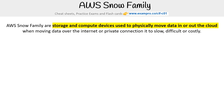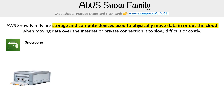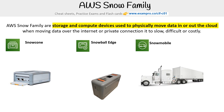Hey, it's Andrew Brown from Exam Pro. We are taking a look at the AWS Snow Family. This is storage and compute devices used to physically move data in or out of the cloud when moving data over the internet or a private connection that is too slow, difficult, or costly. We have Snow Cone, Snowball Edge, and Snowmobile.